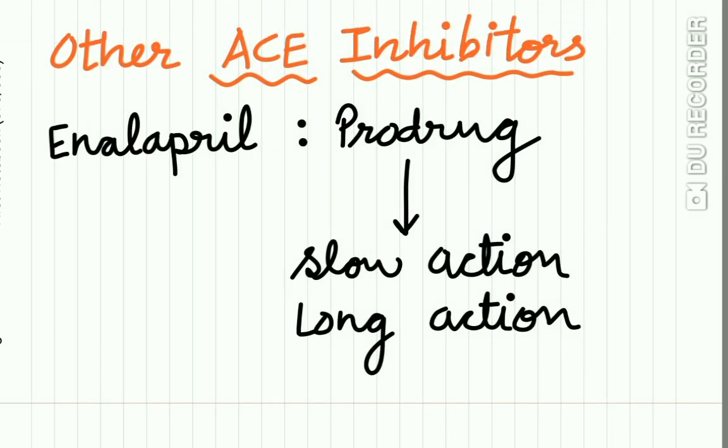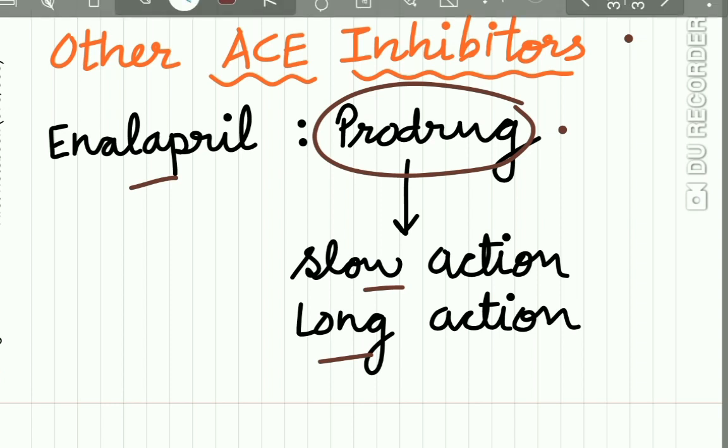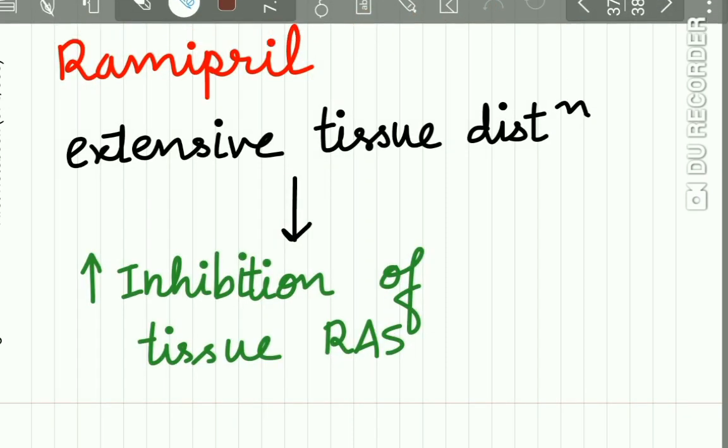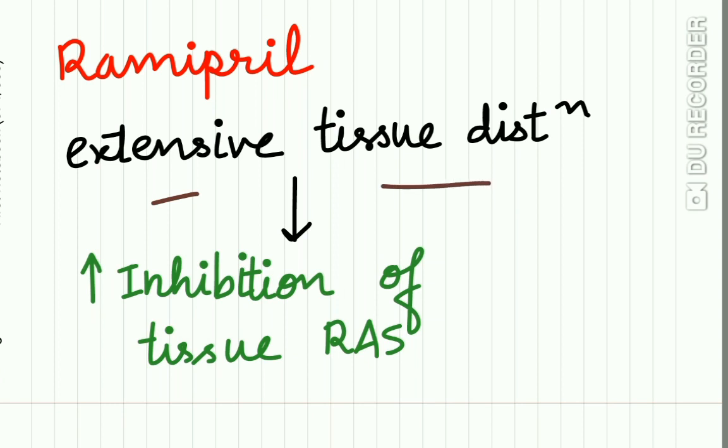Other ACE inhibitors: enalapril, which is a prodrug and has slow action but long duration of action; and ramipril, which has extensive tissue distribution and greater inhibitory effect on the tissue renin-angiotensin system.